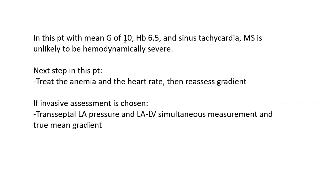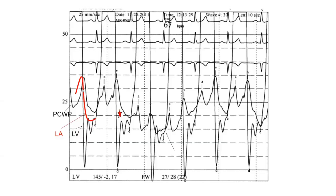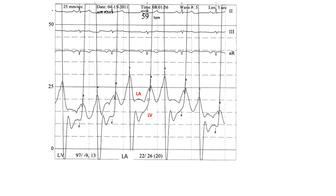So what should we do in this patient? With a mean gradient of 10, hemoglobin 6.5, and sinus tachycardia, MS is unlikely to be hemodynamically severe. The next step: treat the anemia and the heart rate, then reassess the gradient by echo. If invasive assessment is chosen, you need a transseptal LA pressure and LA-LV simultaneous measurement. Also seek whether there is end-diastolic equalization of pressure. The lack of LA-LV equalization in end-diastole — meaning there is still a gap in pressure between LA and LV, particularly with a big LA A-wave and an absent or attenuated LV A-wave — is indicative of hemodynamically severe MS. This is what we call the lack of end-diastolic diastasis of the LA-LV pressures.